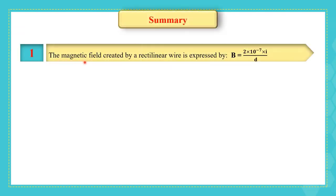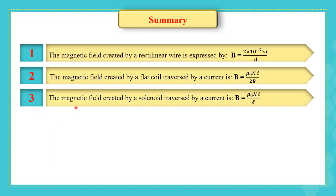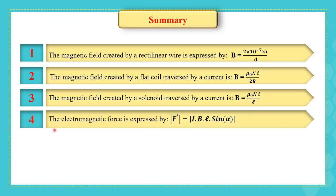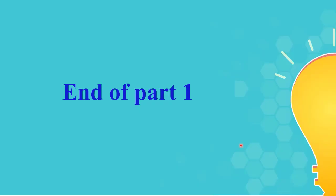Let's now recall the key formulas. The magnetic field created by a long straight wire is B = 2 × 10⁻⁷ × I / D. The field created by a flat coil is B = μ₀NI / (2R). The field inside a solenoid is B = μ₀NI / L. The electromagnetic (Laplace's) force is F = IBL sin α. Finally, the magnetic flux for N turns is Φ = NBS cos(angle between B and n). This is the end of part one. Thank you for listening.